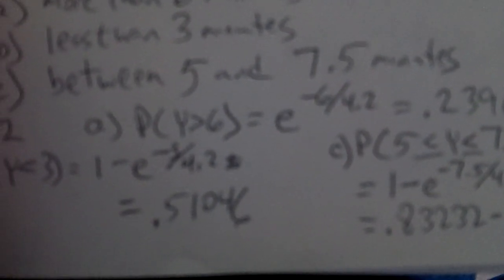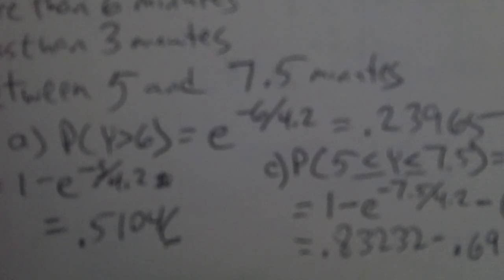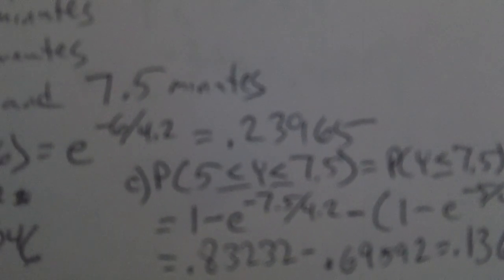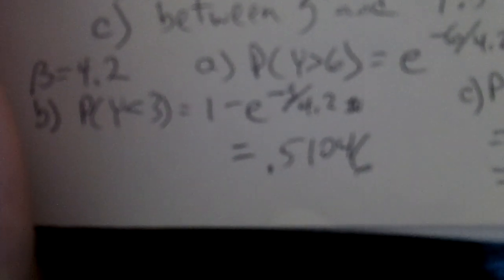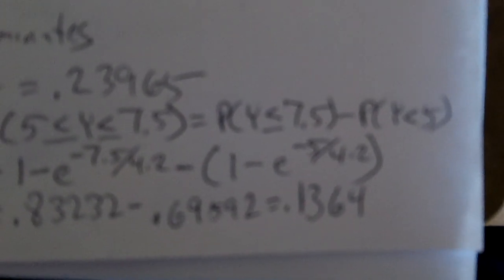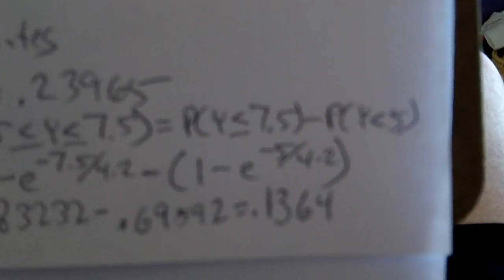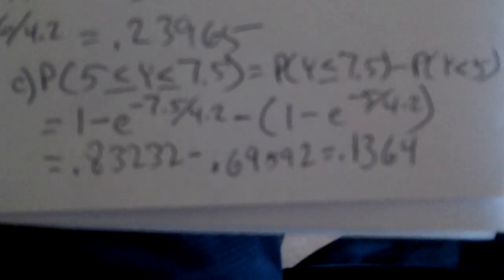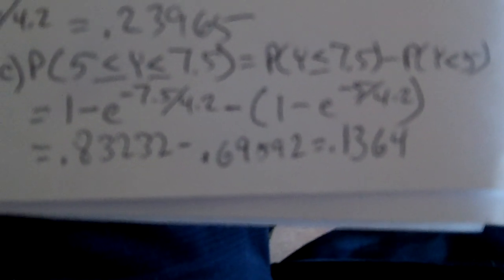For part A (greater than 6 minutes), we use e^(-y/beta): e^(-6/4.2), which works out to just under 0.24. For Y less than 3 minutes, we use 1 minus e^(-y/beta), which gives a little more than 0.51. For Y between 5 and 7.5 minutes, we take P(Y ≤ 7.5) minus P(Y ≤ 5) — again plug and chug — and get 0.1364.